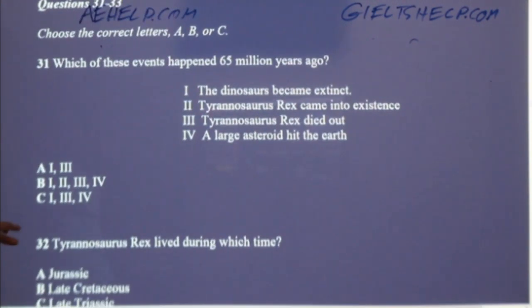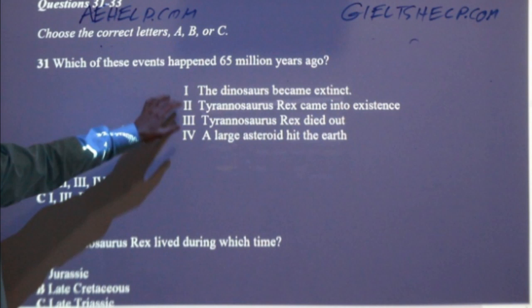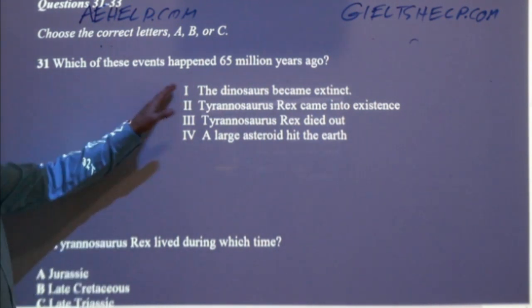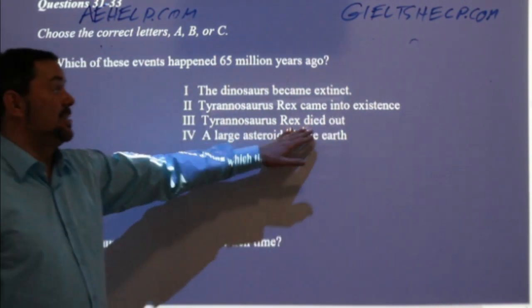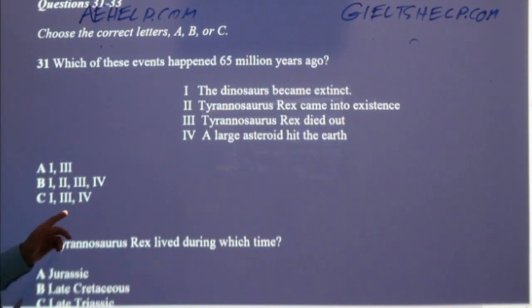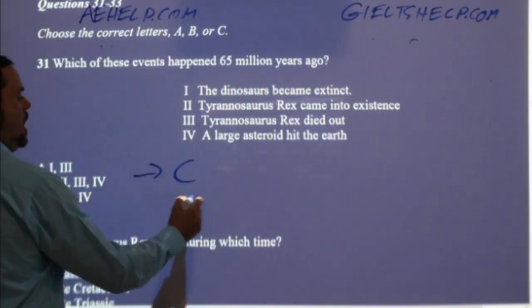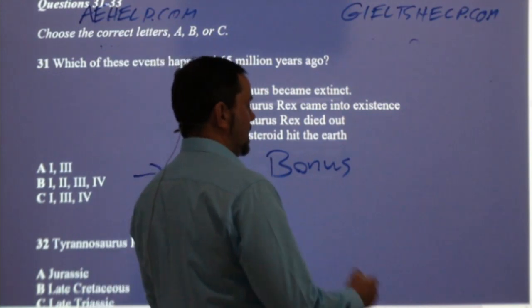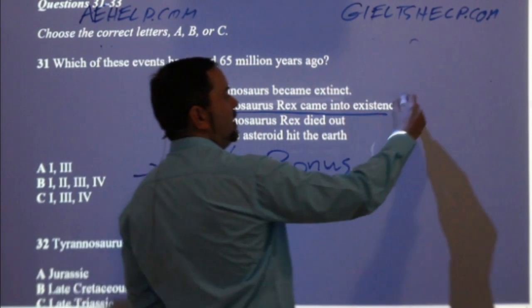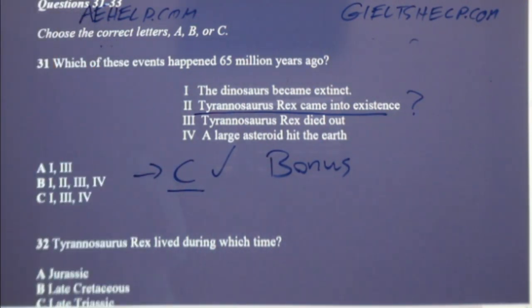Is it A — one and three, the dinosaurs became extinct, Tyrannosaurus Rex died out? B — all of them: the dinosaurs became extinct, Tyrannosaurus Rex came into existence, Tyrannosaurus Rex died out, a large asteroid hit the Earth? Or C — dinosaurs died out, T-Rex died out, and a large asteroid hit the Earth? C is correct. Bonus question: what is the first record of T-Rex? When did the Tyrannosaurus Rex come into existence according to our records? Let's see how many of you caught that one.